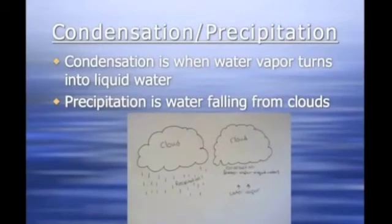Condensation is when water vapor turns into liquid water. This is the process in which clouds form. Precipitation is water falling from the sky. This can be in the form of rain, snow, or sleet.